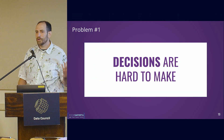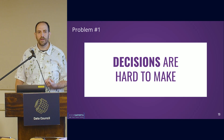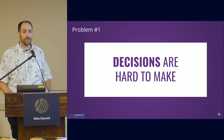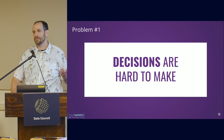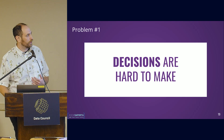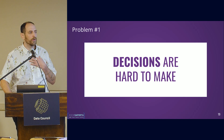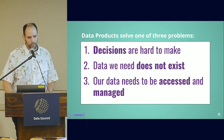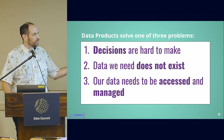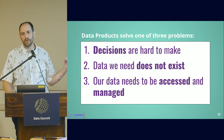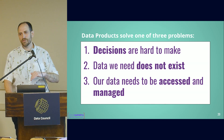And the number one problem we're solving with data: decisions are really hard to make. If we had perfect information and we knew where we wanted to get to, decisions would be incredibly easy. Decisions only become hard because there's a lack of information — we don't know everything we need to make that decision. So data products solve one of these three core things: decisions are hard to make, we don't have the data we need, or the data we have is hard to manage.